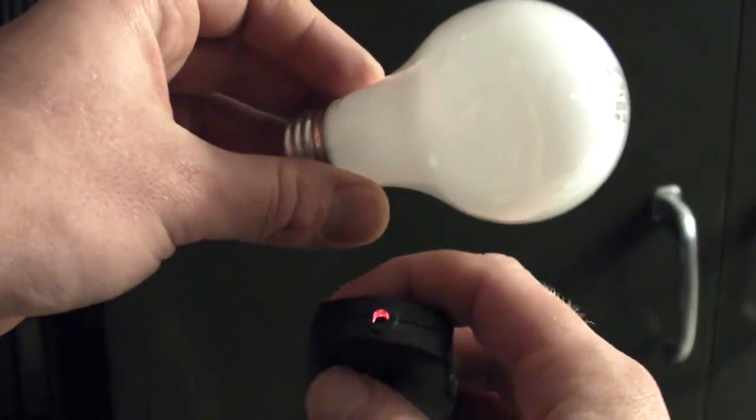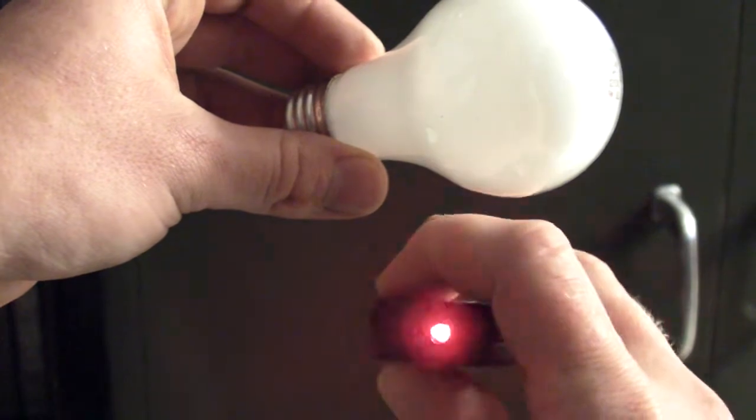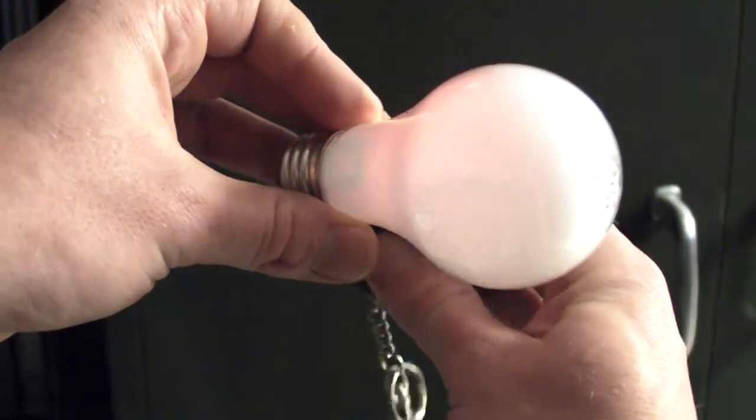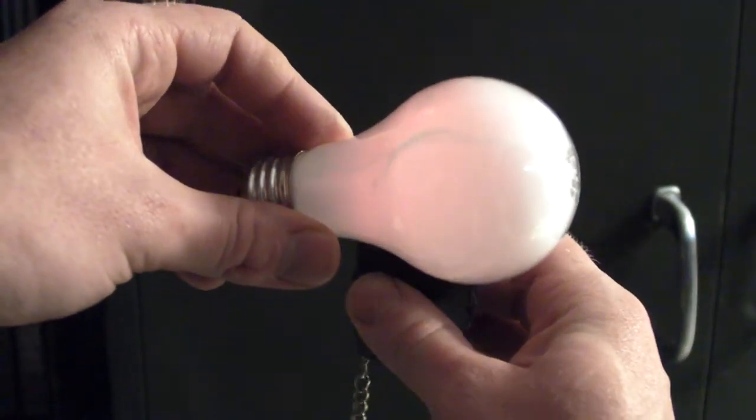All you need is a simple laser pointer like this and just shine it on the other side of the light bulb.